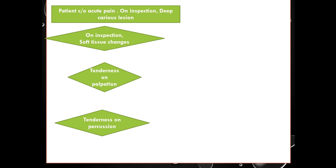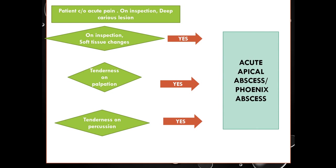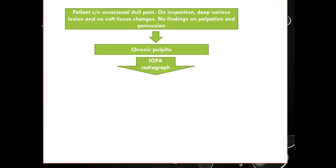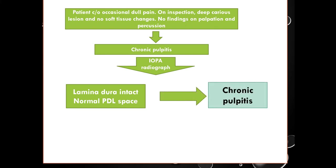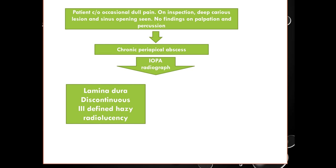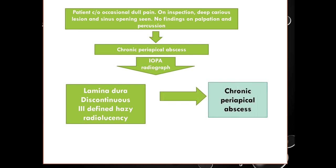If a patient complains of acute pain, on inspection there is a deep carious lesion and soft tissue changes are present, tenderness on palpation present, and tenderness on percussion present, then it is a case of acute apical abscess or phoenix abscess. A patient complaining of occasional dull pain with deep carious lesion, no soft tissue changes, no findings on palpation and percussion — provisional diagnosis is chronic pulpitis. On radiograph, if the lamina dura is intact with normal PDL space, it is chronic pulpitis. If the radiograph shows discontinuous lamina dura with ill-defined hazy radiolucency at the periapex, the case is diagnosed as chronic periapical abscess.